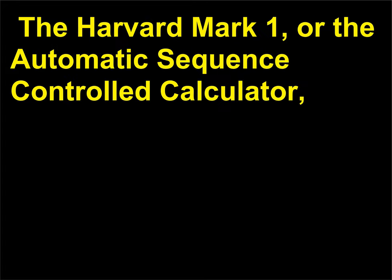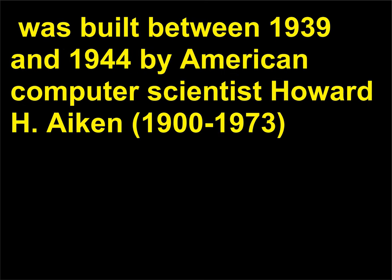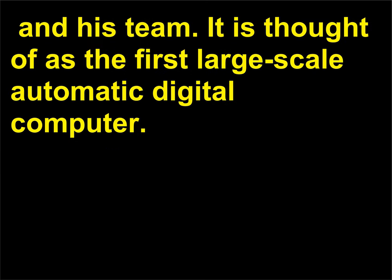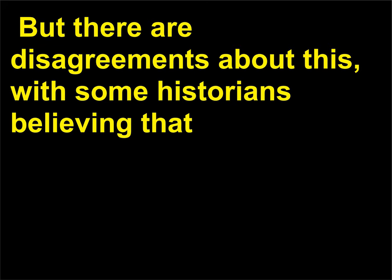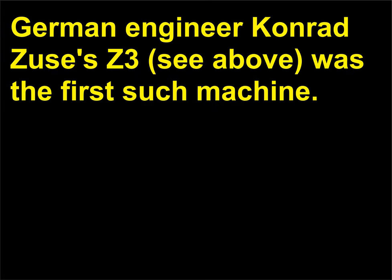The Harvard Mark 1, or the Automatic Sequence Controlled Calculator, was built between 1939 and 1944 by American computer scientist Howard H. Aiken (1900–1973) and his team. It is thought of as the first large-scale automatic digital computer, but there are disagreements about this, with some historians believing that German engineer Konrad Zuse's Z3 was the first such machine.